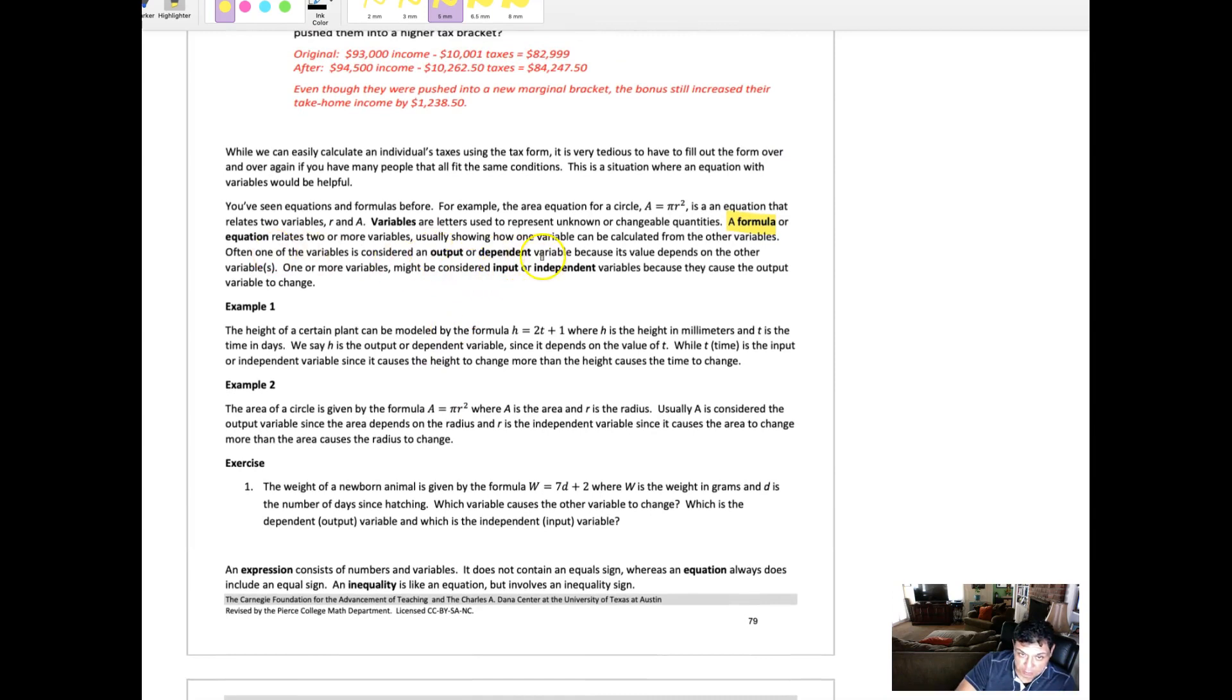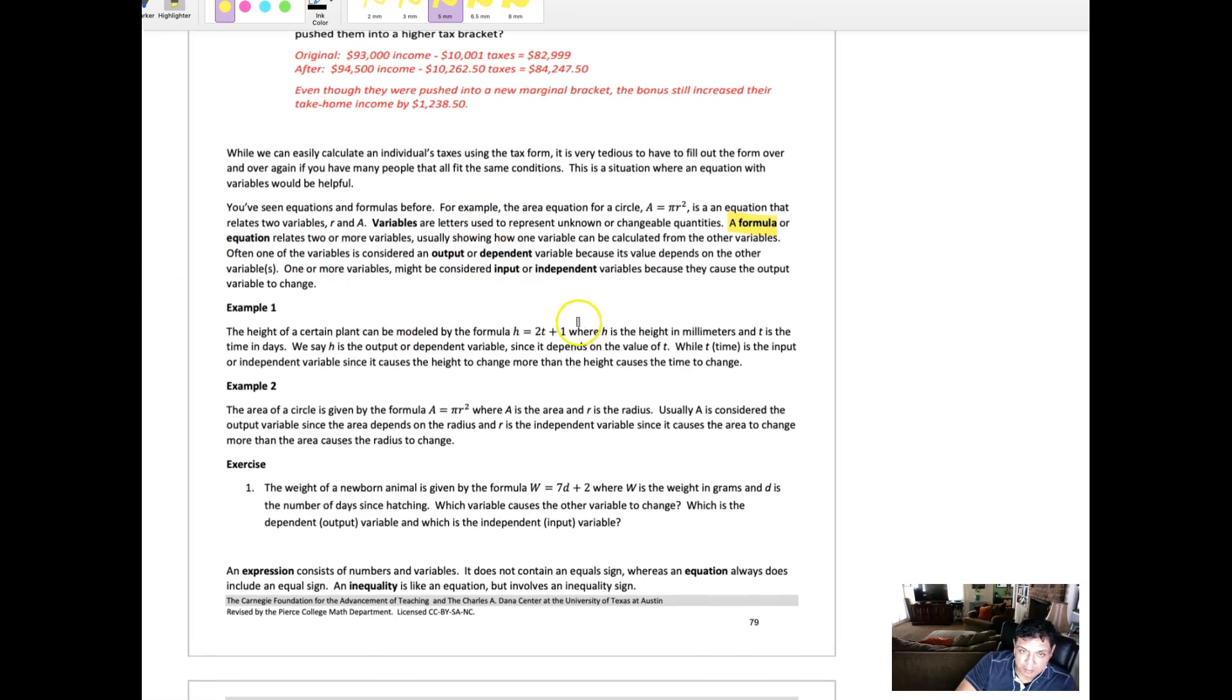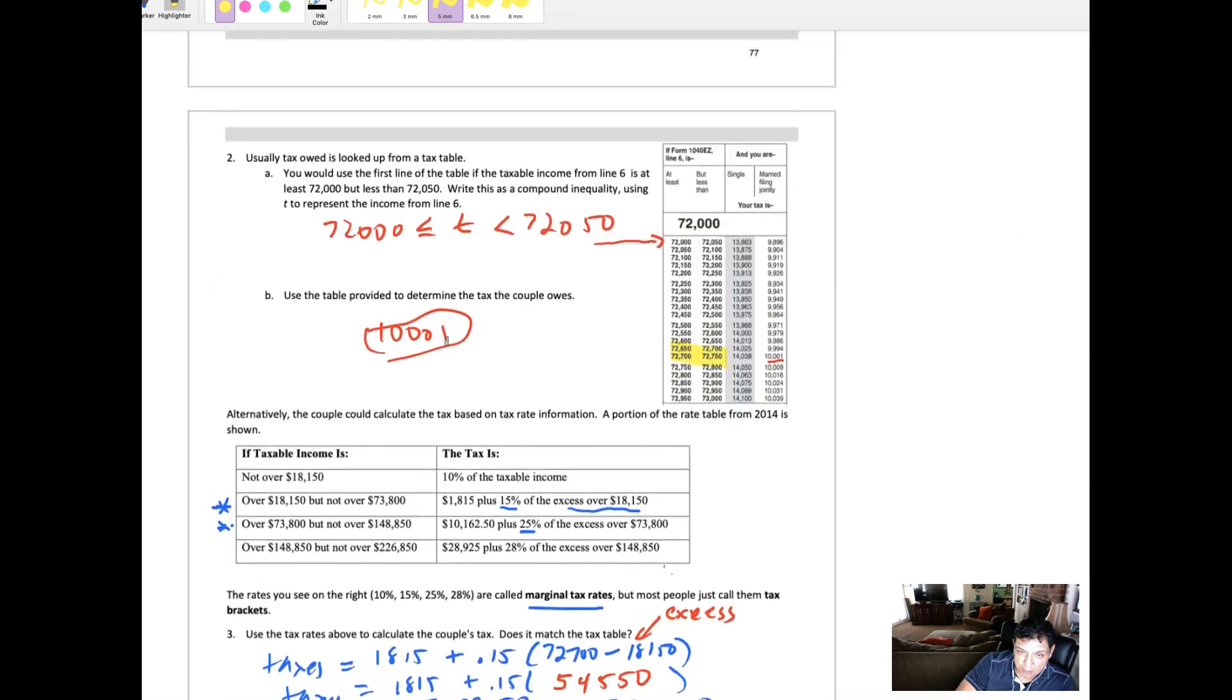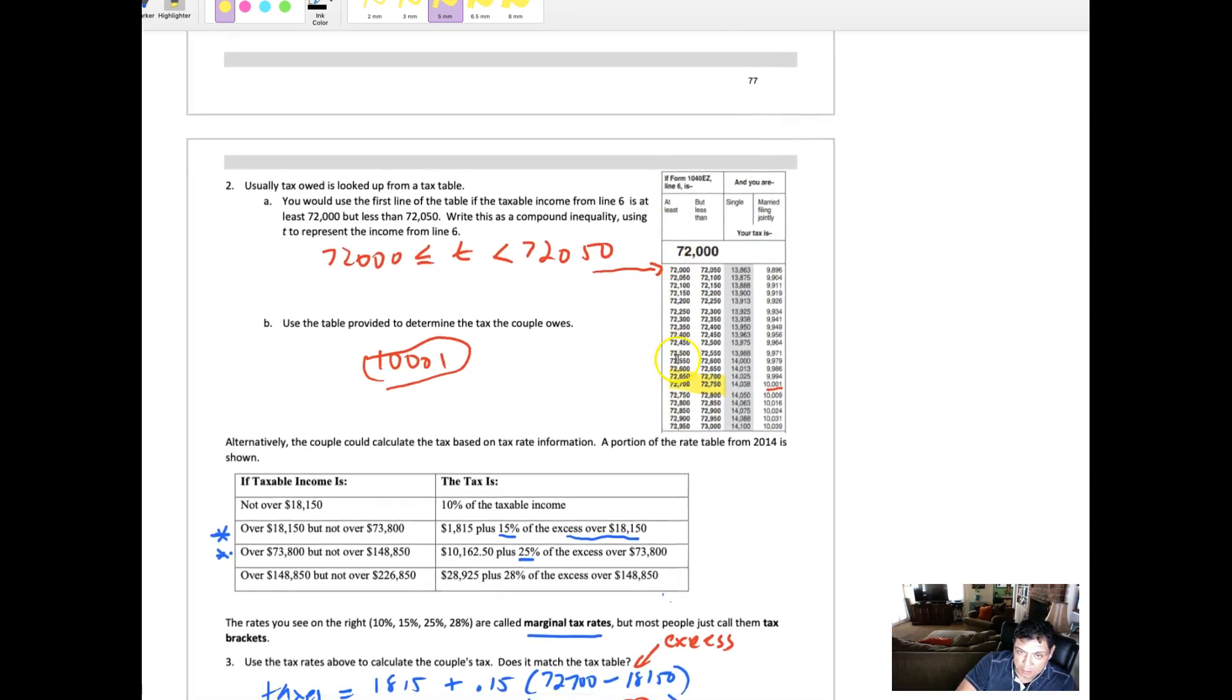And those variables are called independent or dependent variables because the independent variable kind of causes the output to happen. And so the dependent depends upon what the input is. And that's related to what we talked about previously. Your taxes depend upon your income.